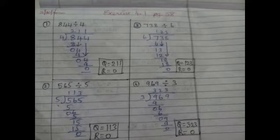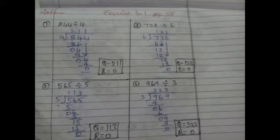Second sum: 565 divided by 5. The divisor is 5 and the dividend is 565. Say the 5 times table. First digit is 5; 1 five is 5; 5 minus 5 is 0. Bring down the next digit 6. How many 5s in 6? 1 five is 5; 6 minus 5 is 1. Bring down the next digit: we have 15. 3 fives are 15; 15 minus 15 is 0. The quotient is 113 and the remainder is 0.